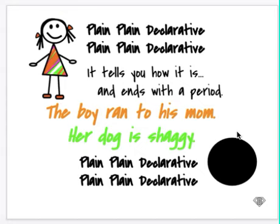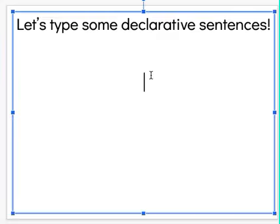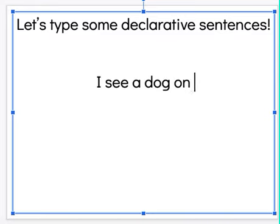So will you help me sing this song? Okay, ready? Plain, plain declarative, plain, plain declarative. It tells you how it is and ends with a period. The boy ran to his mom. Her dog is shaggy. Plain, plain declarative, plain, plain declarative.